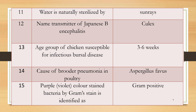Question 15: Bacteria stained purple or violet color by the Gram stain method — this bacteria is identified as? Answer: Gram-positive bacteria show a purple or violet color by Gram staining.